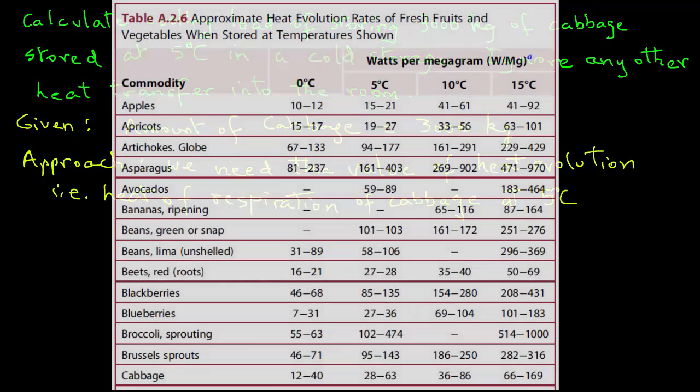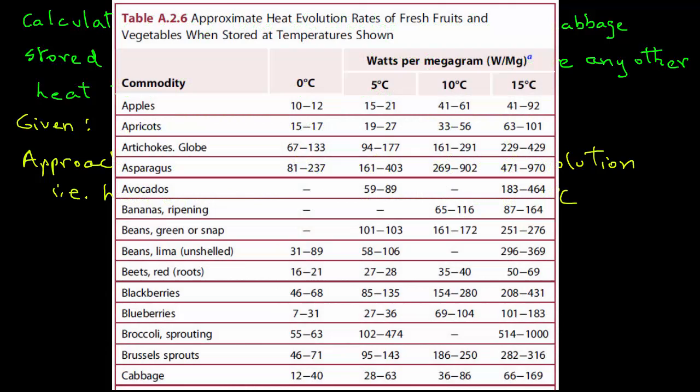Here we can see a table that shows heat of respiration for various products at different temperatures. We note that for cabbage, the heat of respiration at 5 degrees C is 28 to 63 watts per megagram. Note that the M is capital and represents megagram. We will select the higher number in order to make sure that we have a sufficient safety margin, so we will choose the larger value of 63 watts per megagram.